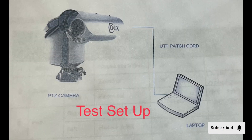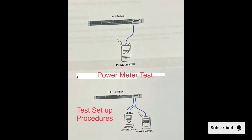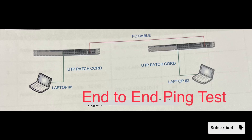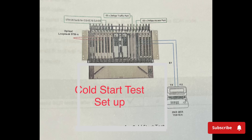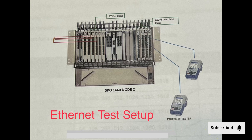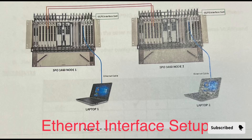This is the test setup for the camera. There are also test setups for your patch cord, FO cable, power test meter, and these are part of the procedure. Check the patch cord as well. The ping test is an end-to-end test — this is how the procedure needs to be done during testing. The output performance of this setup — as you can see, the internet test setup. These photos show clearly what kind of testing is to be carried out during the factory acceptance testing.